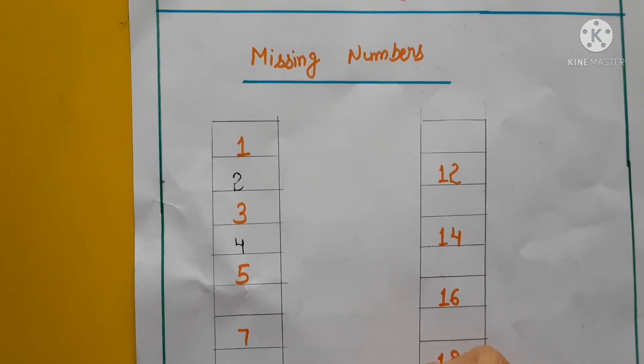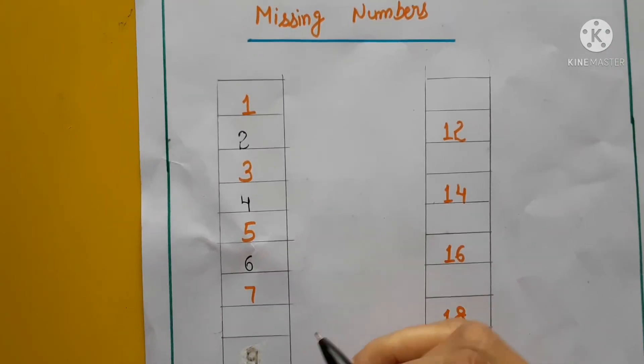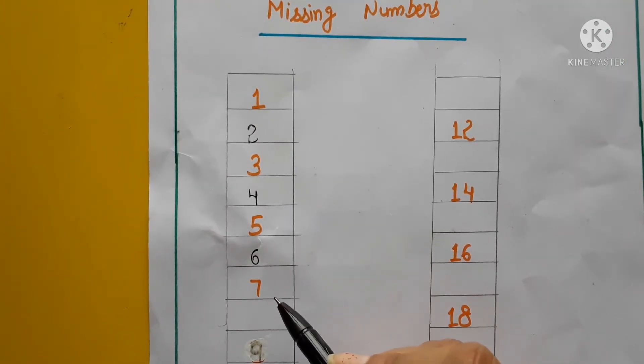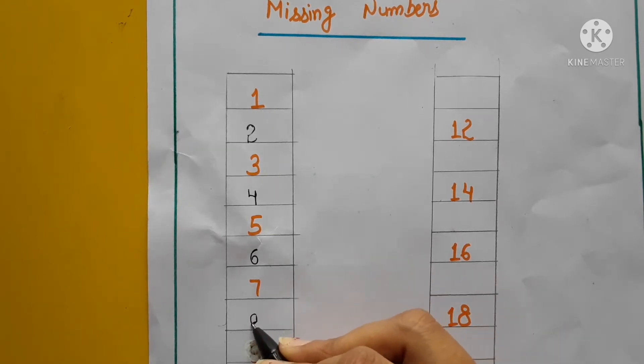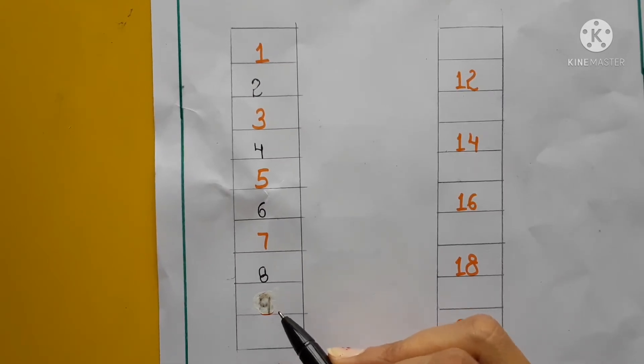4 ke baad kya aata hai hamara? 5. And 5 ke baad kya aayega hamara? 6. Toh haom yaha pe 6 mention karengi. Then 7 toh already hai. 7 ke baad kya aayega? 8. Toh haom yaha pe kaunsa digit likhenge? 8. 8 ke baad hai hamara 9. And 9 ke baad kya aayega? 10.